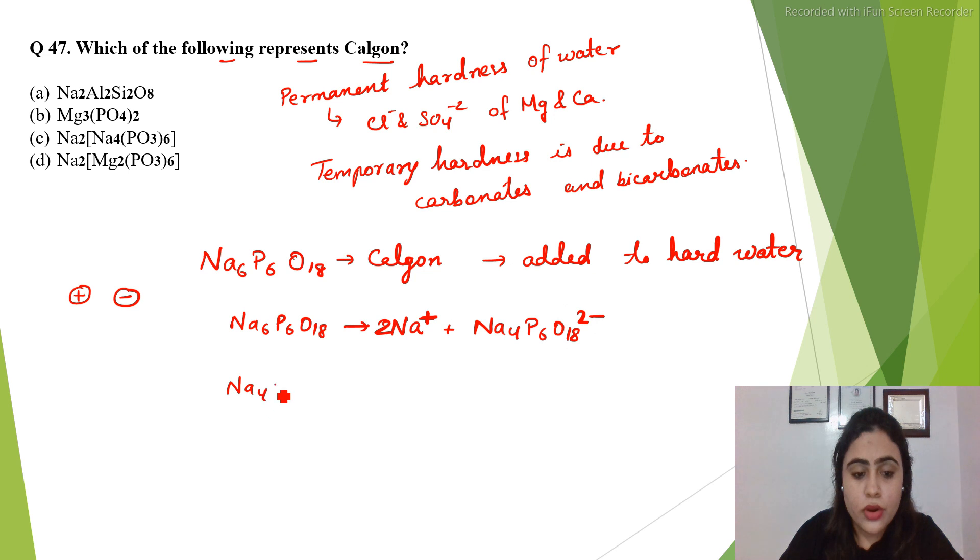Now this Na4P6O18 will combine with the metal which is present in the hard water—either magnesium or calcium—and it will form a precipitate.